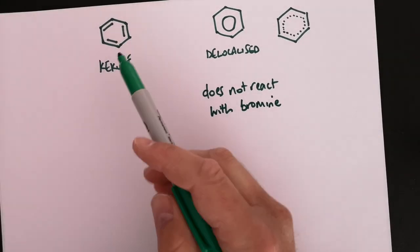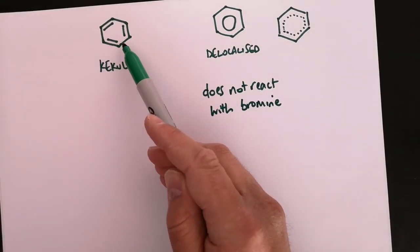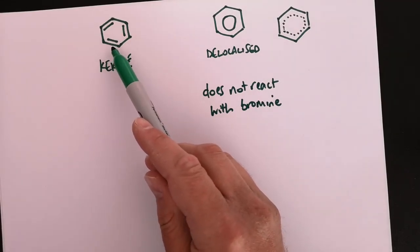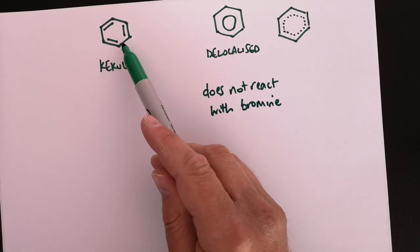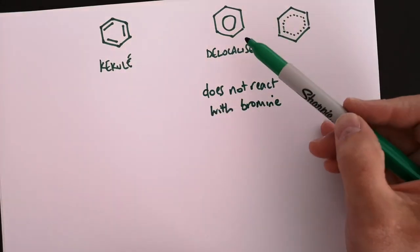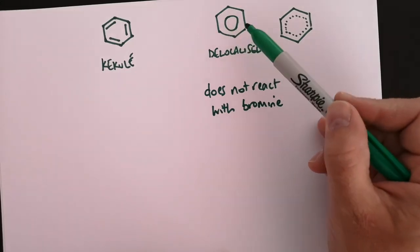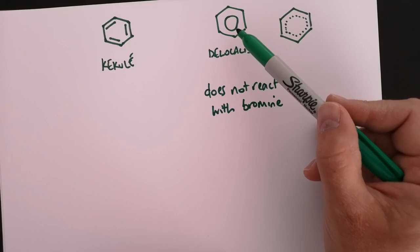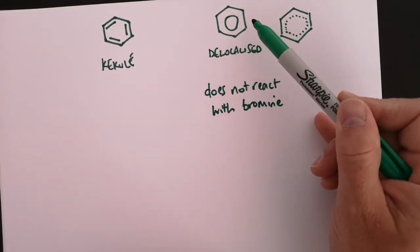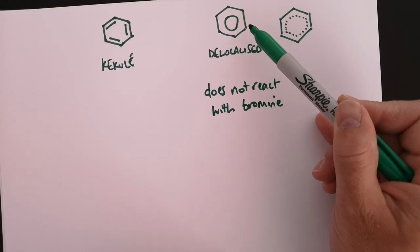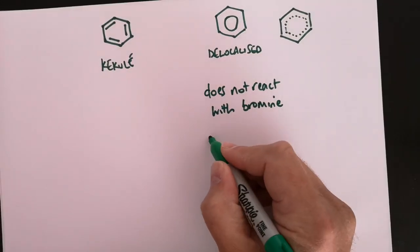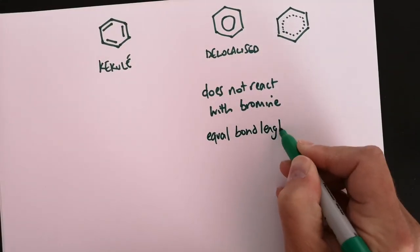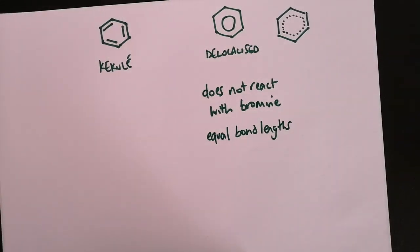Another piece of evidence is bond length. In the Kekulé model, the alternating double and single bonds would give different bond lengths - the double bond would be shorter and the single bond would be longer. However, evidence from benzene shows that all of the bond lengths and all the bond angles are equal, and the bond length is somewhere between a single carbon-carbon bond and a double carbon-carbon bond. This backs up the delocalized structure compared to the Kekulé structure.